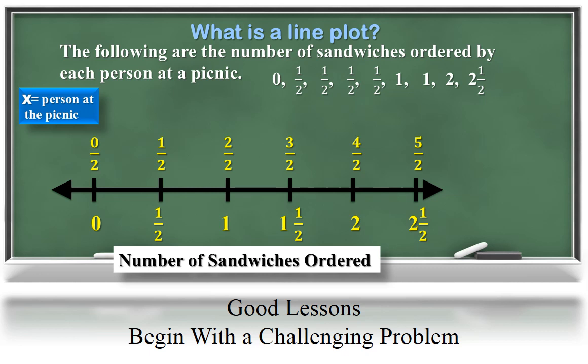Next, we can add X's to show how many people ordered each amount of sandwich. There was one person who ordered zero sandwiches. Four people ordered one half of a sandwich. Two people ordered one whole sandwich. One person ordered two sandwiches. And one person ordered two and one half sandwiches.